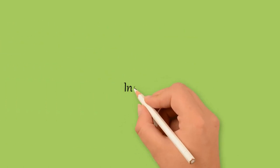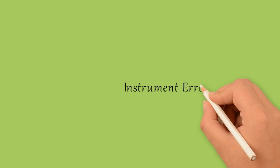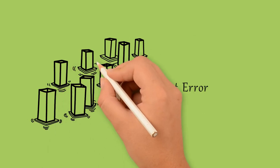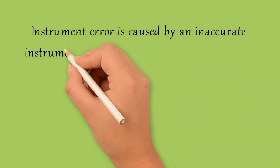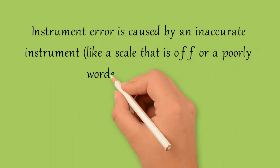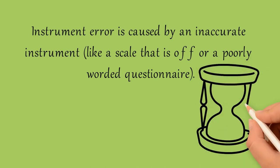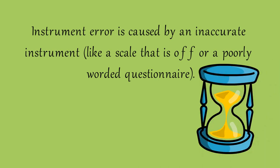Third type hamare paas aati hai instrument error. Aapko naam se hi pata chal raha hoga — instrument error means ke aapke instrument mein kisi kisam ka problem hai jis ki wajah se aap error face kar rahe ho. Instrument error is caused by an inaccurate instrument, like a scale that is off or a poorly worded questionnaire. Hum log isko survey pe bhi apply kar sakte hain — let's suppose jo maine survey ya questionnaire design kiya, woh poorly worded tha, to us case mein survey as an instrument mera sahi nahi tha, jis ki wajah se mere results sahi nahi aayenge — that is instrument error.